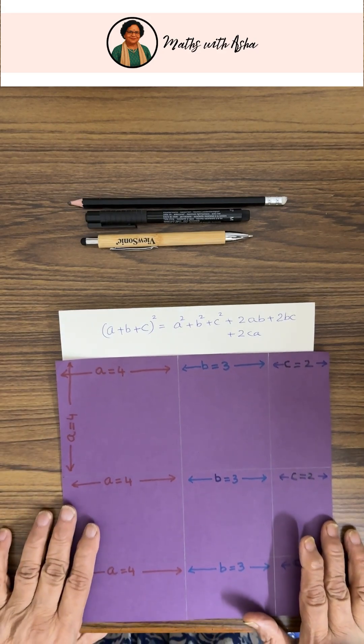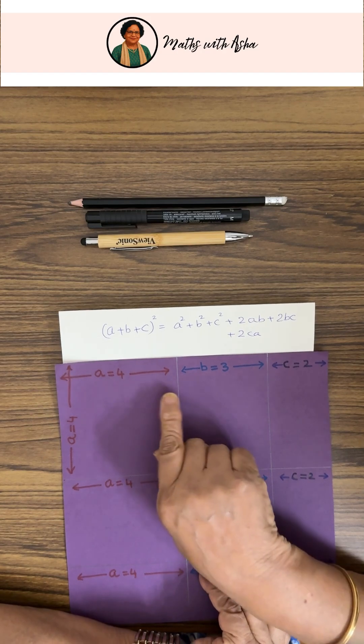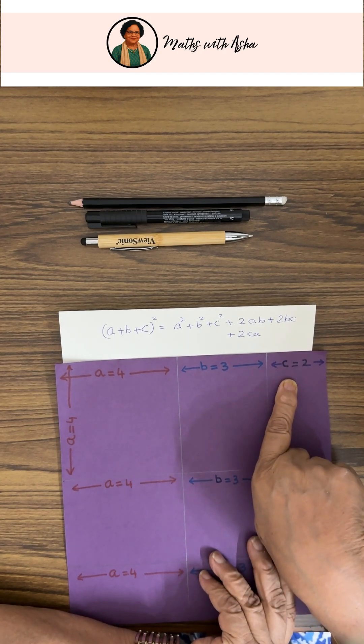So for this we are taking the values of a as 4, b as 3, and c as 2.